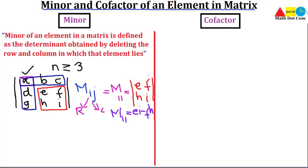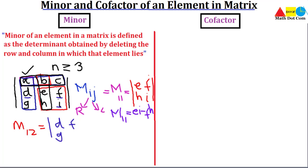Similarly, we can find the minor of other elements. For M-1-2, the element is in the first row and second column. We delete that row and column and consider the remaining elements: D, F, G, and I. The minor M-1-2 equals D·I minus F·G. This is the minor of the element at position row 1, column 2.